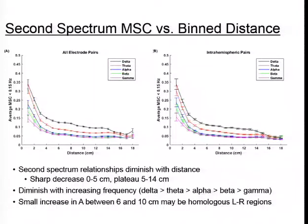Second spectrum relationships diminish with distance — a sharp decrease between 0 and 5 centimeters and a plateau between 5 and 14 centimeters. Relationships also diminish with increasing frequency, with delta second spectrum showing the highest coherence, decreasing up through gamma. In the plot showing all pairs, there is a small increase between 6 and 10 centimeters not seen in the intra-hemispheric pairs alone, which we think may be due to homologous left and right brain regions contributing to an increase in average coherence.